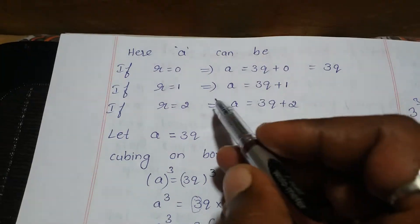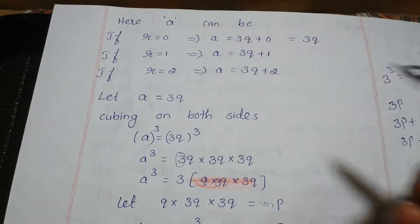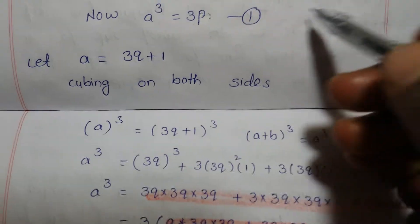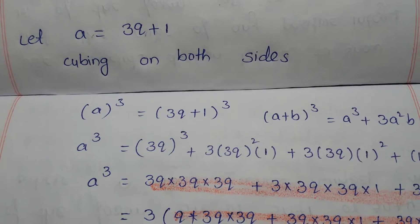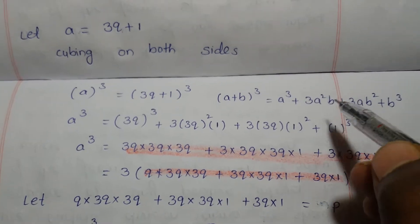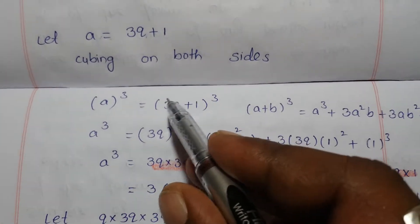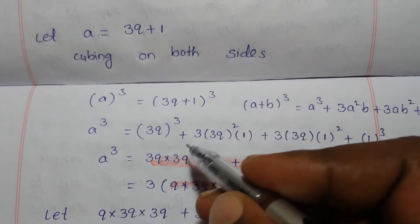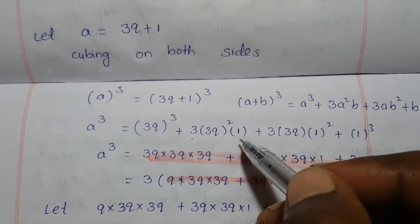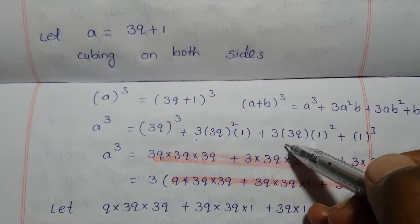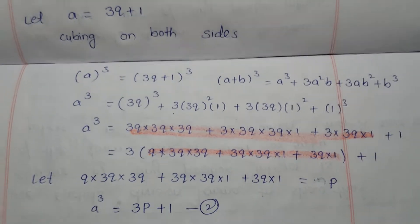Now take the second case: if r is 1, the dividend is a equals 3q plus 1. Cubing on both sides gives a cubed equals 3q plus 1, all cubed. Using the identity (A plus B) cubed equals A cubed plus 3A squared B plus 3AB squared plus B cubed, we get a cubed equals 3q all cubed plus 3 into 3q squared into 1 plus 3 into 3q into 1 squared plus 1 cubed.